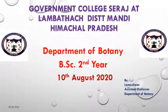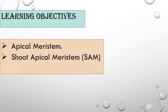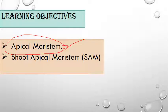Good morning. In the last lecture we discussed about meristems. Today we will discuss about apical meristem. On the basis of position, there are three types: apical, intercalary, and lateral meristem. We will discuss apical meristem, as the name indicates, it is present at the apex of shoot and root. We will discuss shoot apical meristem (SAM) and root apical meristem in the next lecture, so our main focus is on shoot apical meristem.